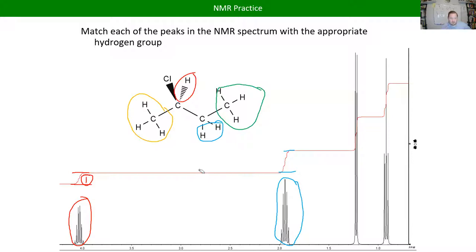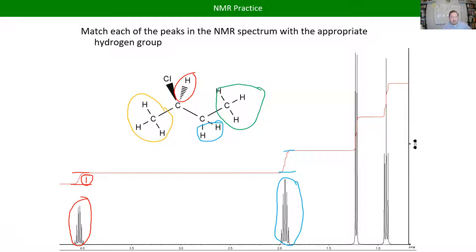The two methyls can be distinguished in two ways: the orange methyl is closer to the chlorine than the green methyl, so we'd expect the orange methyl to be further to the left (more deshielded). It would also be a doublet because it only has one hydrogen next door. Those two pieces — chemical shift position and multiplicity — allow us to tell which of the two methyls is which.